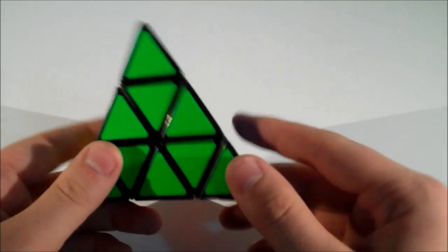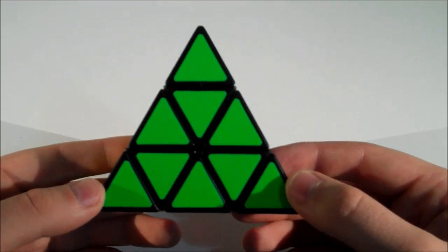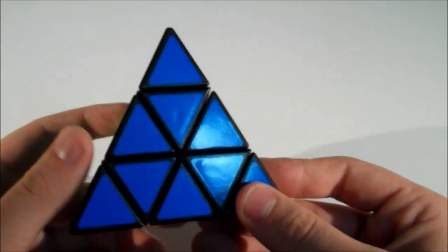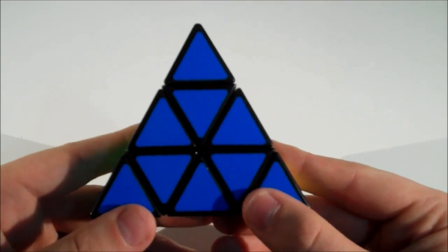As you can see, we have a very bright fluorescent green—that's one of the nicest greens I've ever seen on a puzzle. We have quite a deep light blue, very nice, kind of like a royal blue.